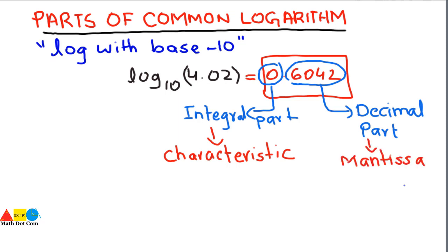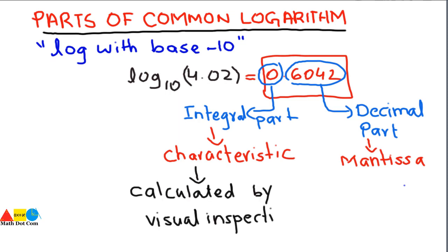Now let's see how you can calculate these two parts using the log table, so that you can find the common logarithm without a calculator. The characteristic can be found by visual inspection, and the mantissa part of the common logarithm can be calculated by using the log table of common logarithms. We will see this using an example.